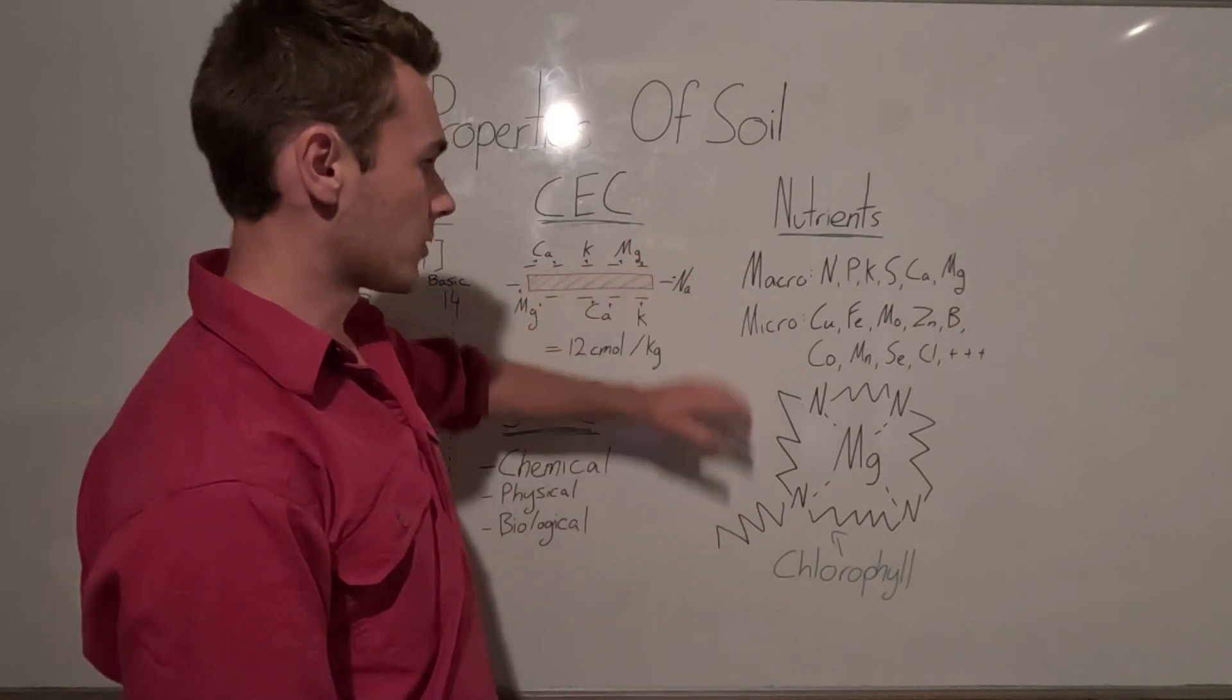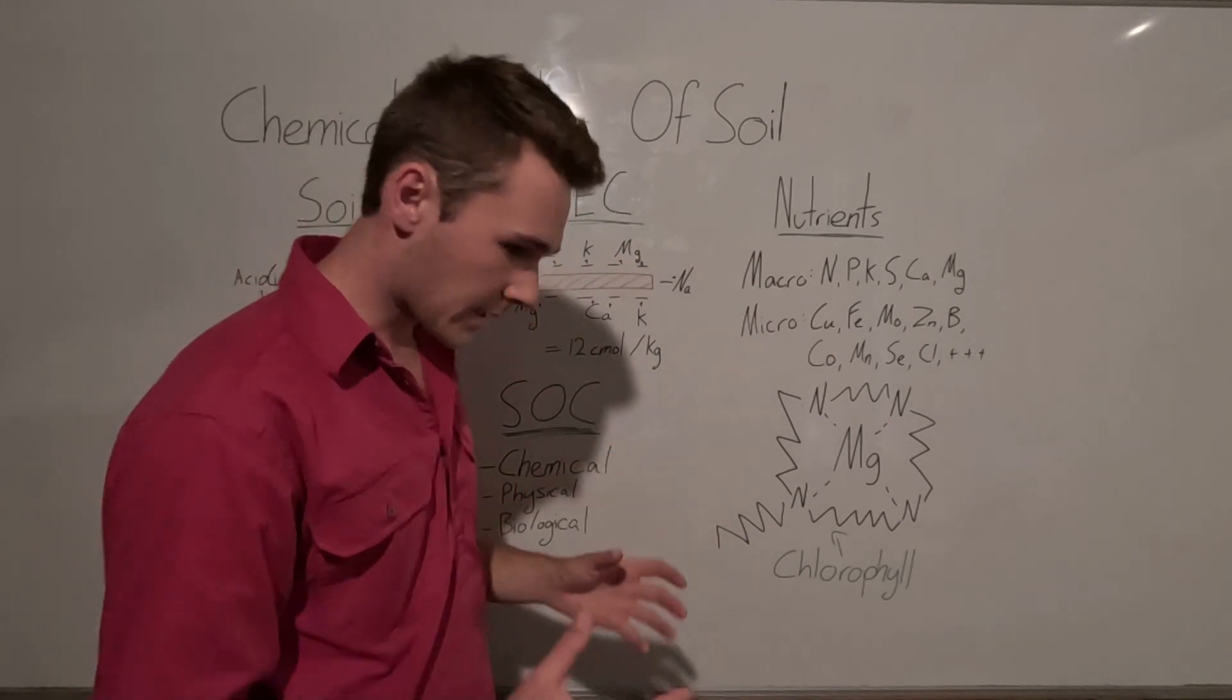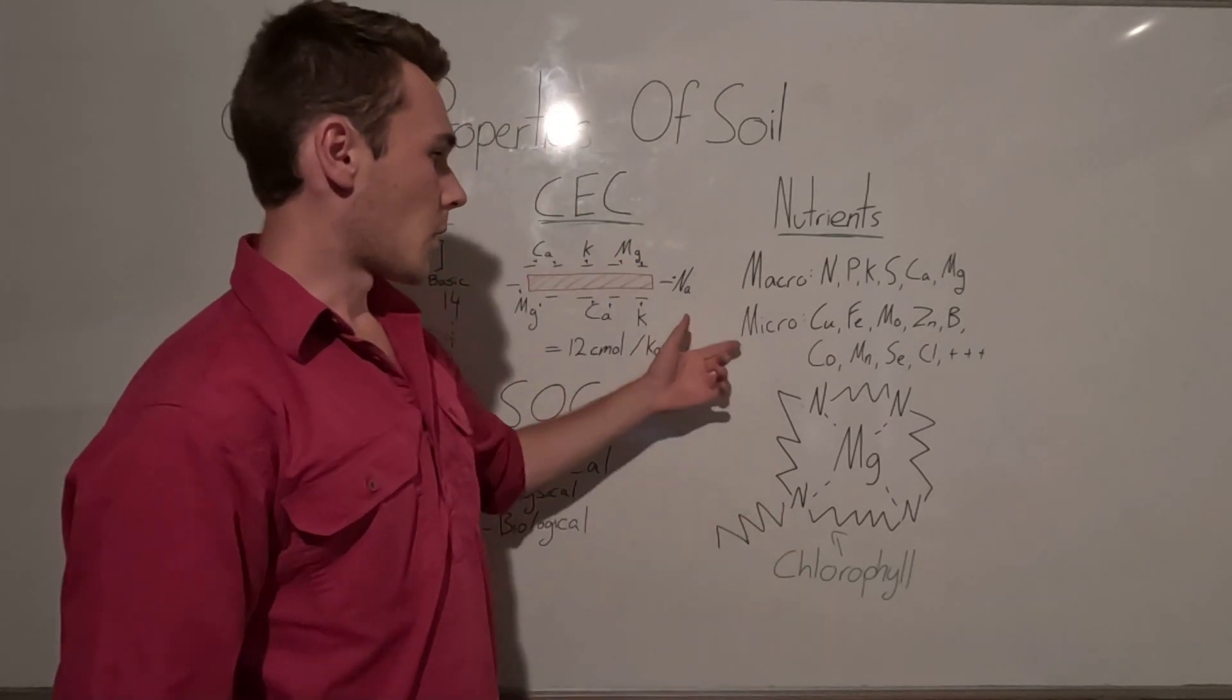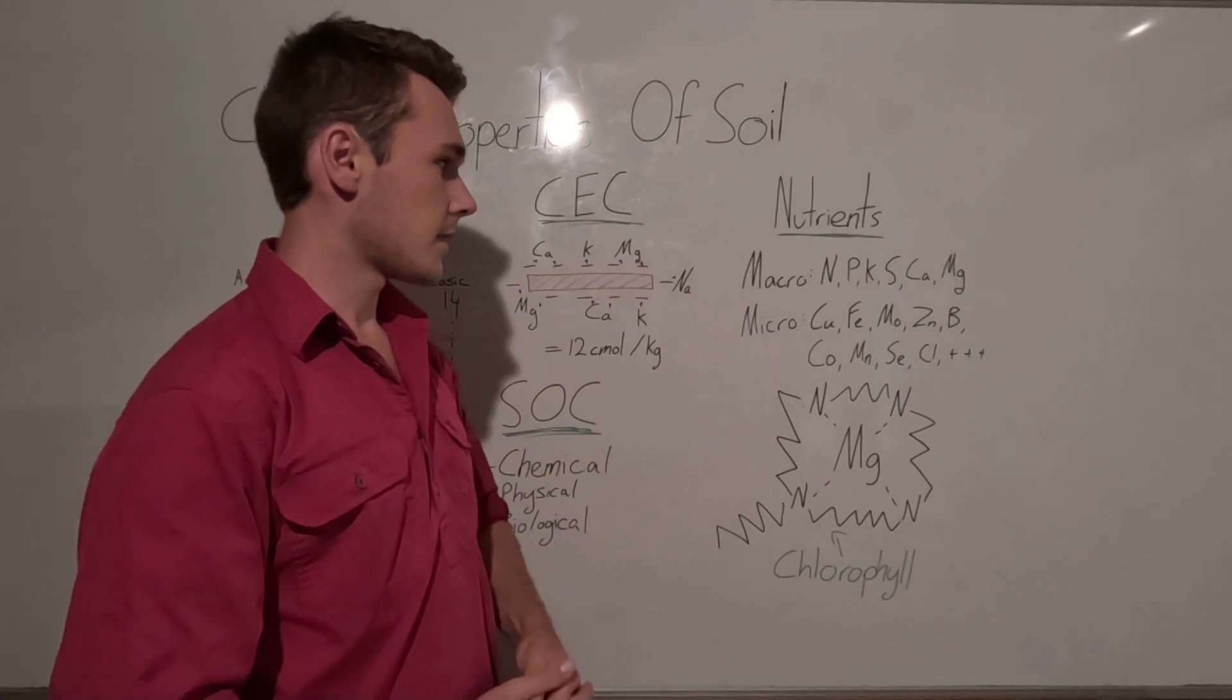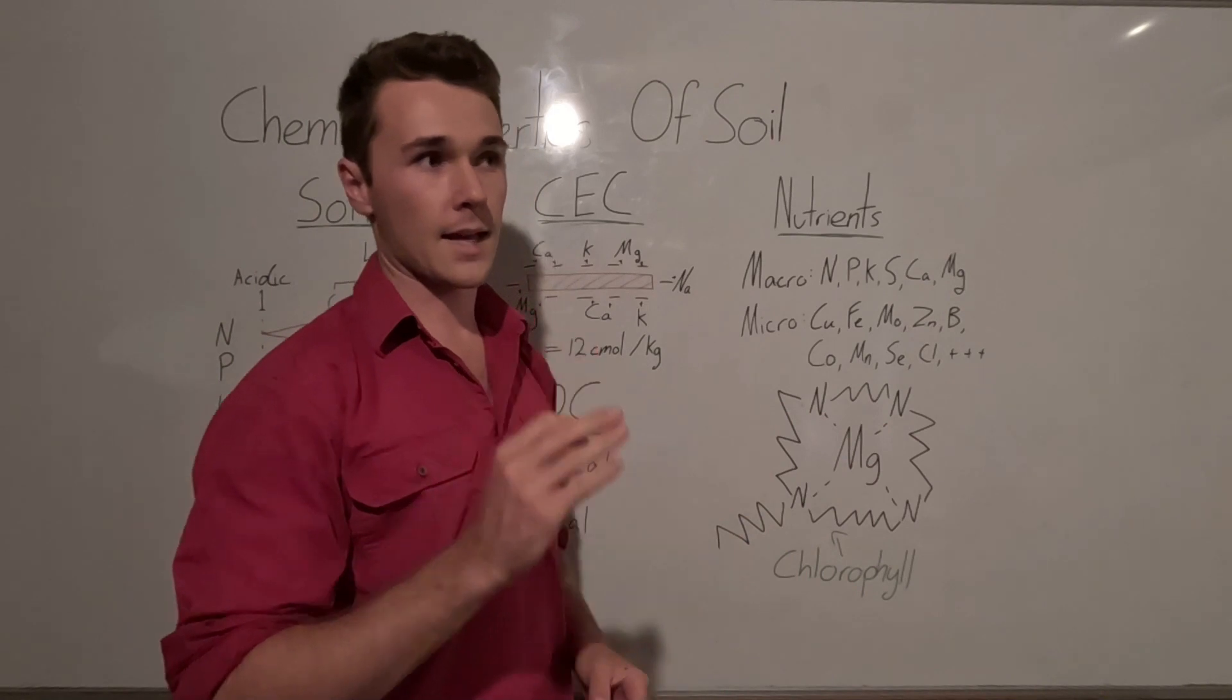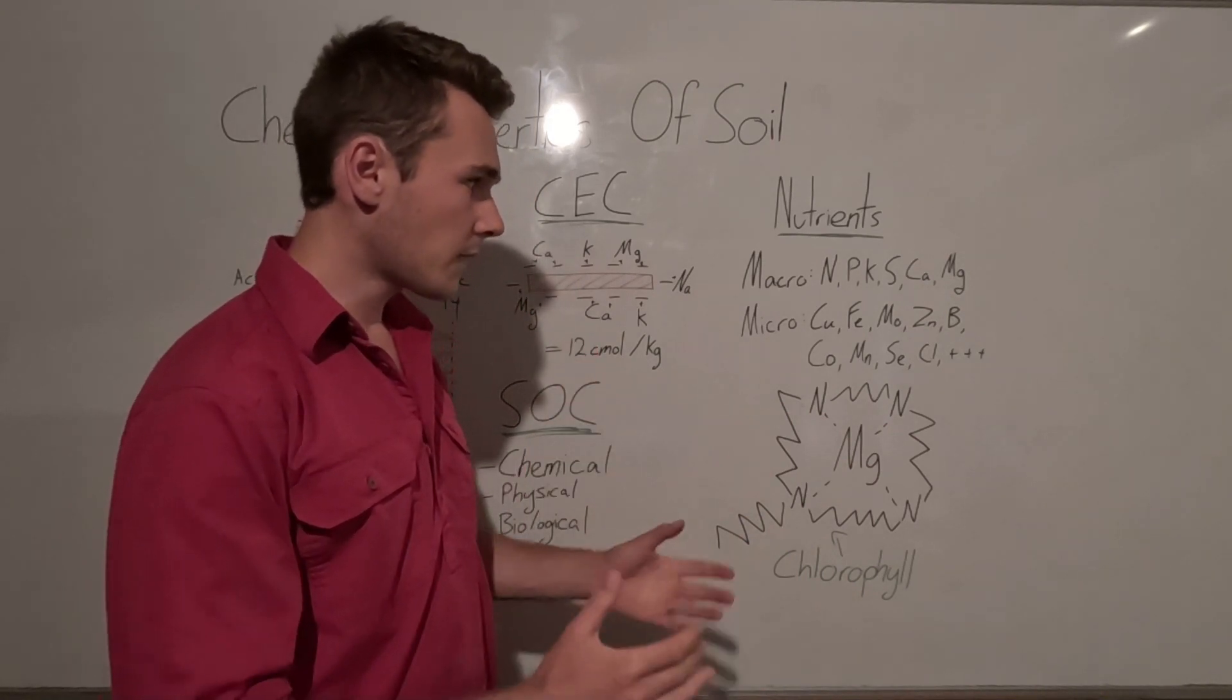We have macronutrients and micronutrients. As the name suggests, macro means large, so we need these nutrients in large supply, and micro is the nutrients we need not in large supplies, just in sufficient amounts so that we can function as usual.